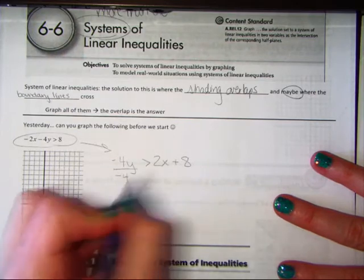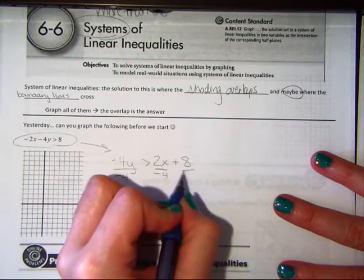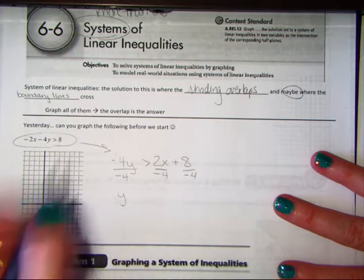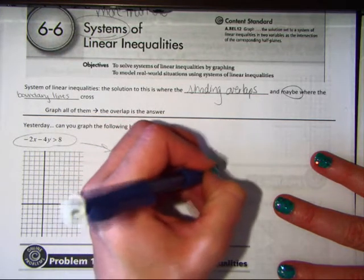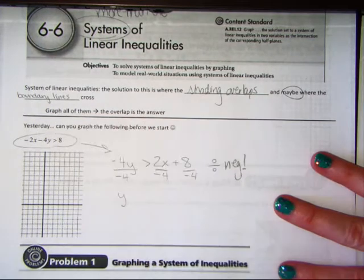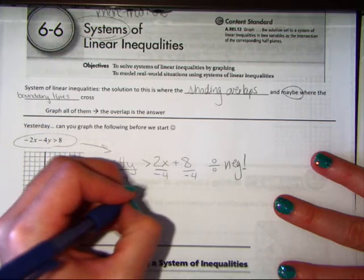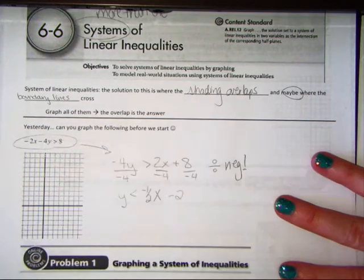That's how you graph everything. So, negative 4y is less than a positive 2x, when you move it over, plus 8. Divide by negative 4, side by side, you must divide. You get y. Now, be very careful when you divide by a negative.